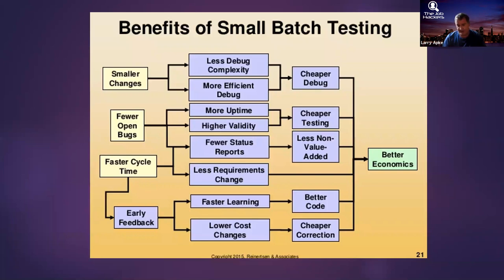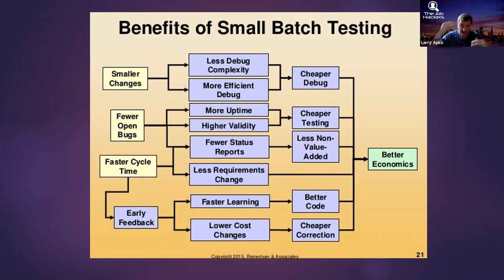With fewer open bugs, you'll have higher system validity and more uptime. But also, when you find a defect, you need to catalog it, track it, and put it into your backlog. Having fewer defects means fewer support issues blocking you from making other changes to the system. There's a huge opportunity cost to having a lot of defects — this is the concept of technical debt. Smaller batches reduce that technical debt.